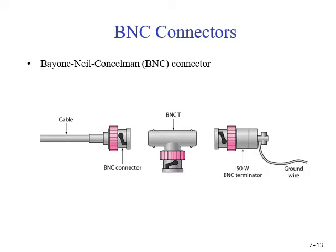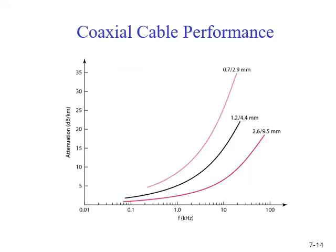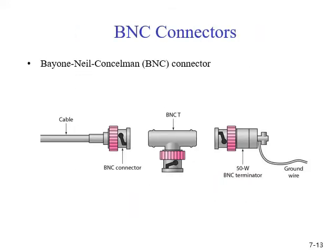The BNC connector is used to connect the end of the cable to a device such as a TV set. The BNC connector is used in Ethernet networks to branch out a connection to a computer or other devices. The BNC connector is also used at the end of the cable to prevent the reflection of the signal, so signal reflection is being managed here as well.